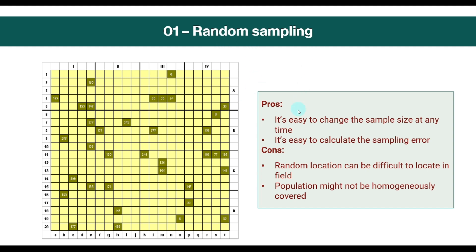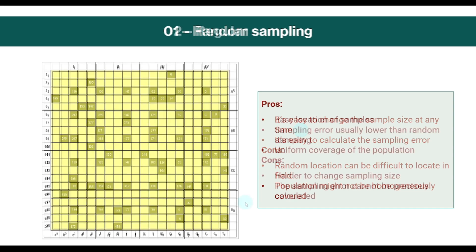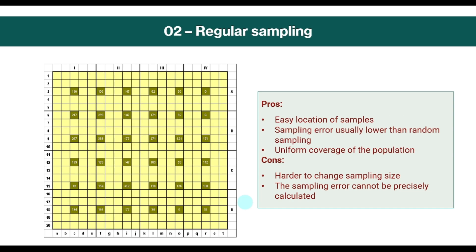The pros of random sampling are that it's easy to change the sample size at any time, and it's very easy to calculate the sampling error. The cons are that random locations can be difficult to locate in the field, and that the population might not be homogeneously covered.